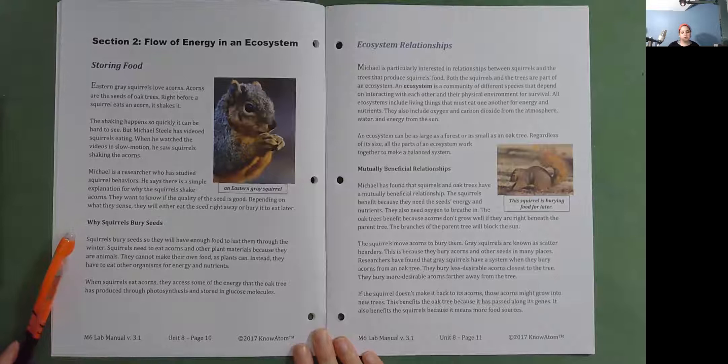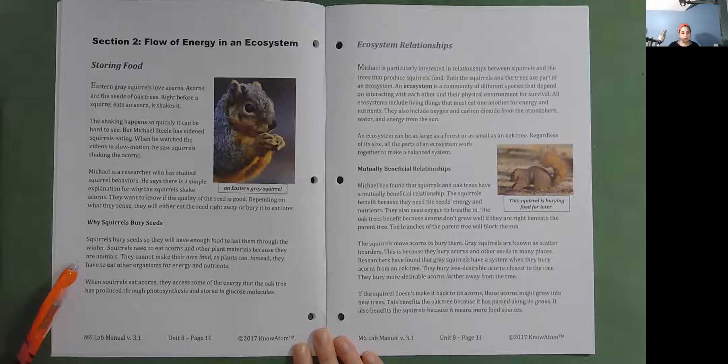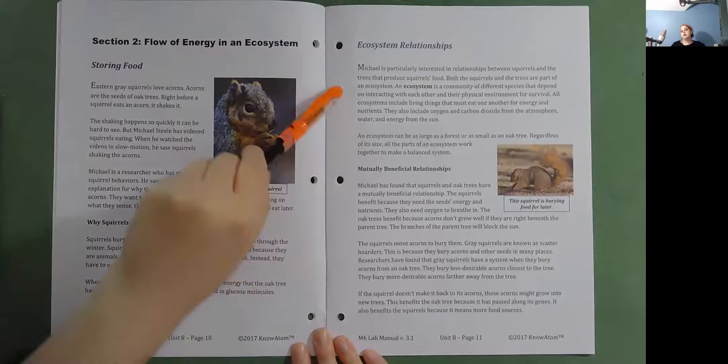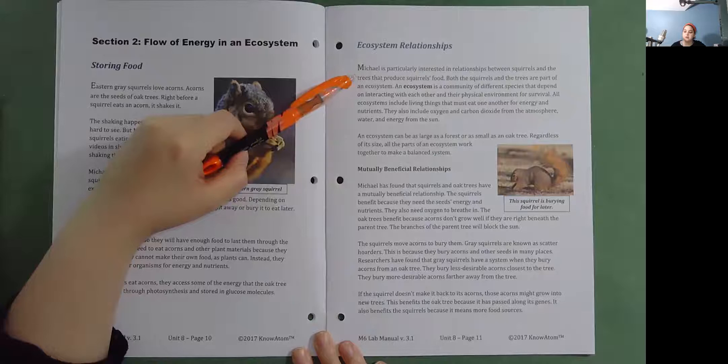Why squirrels bury seeds. Squirrels bury seeds so they will have enough food to last them through the winter. Squirrels need to eat acorns and other plant materials because they are animals. They cannot make their own food as plants can. Instead, they have to eat other organisms for energy and nutrients. When squirrels eat acorns, they access some of the energy that the oak tree has produced through photosynthesis and stored in glucose molecules. Ecosystem relationships.